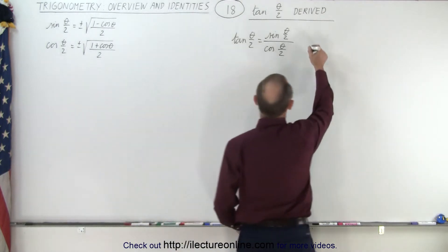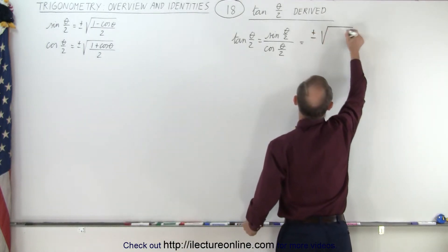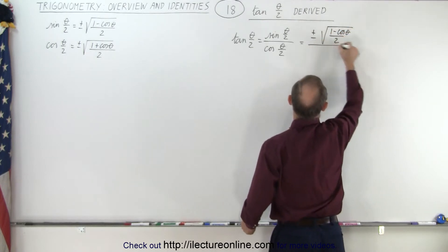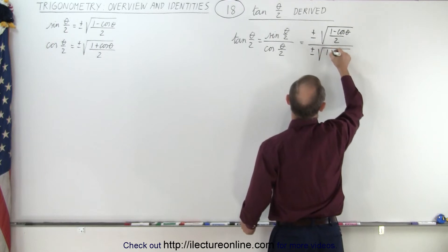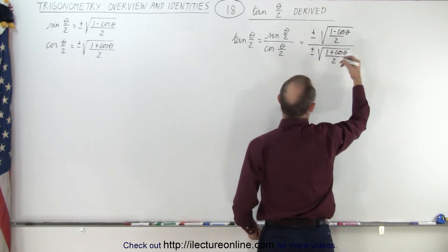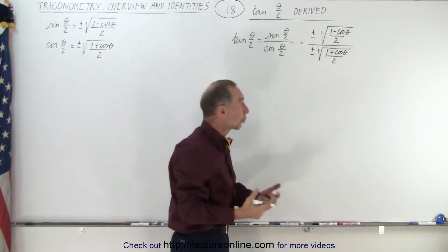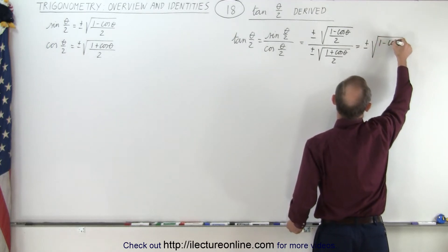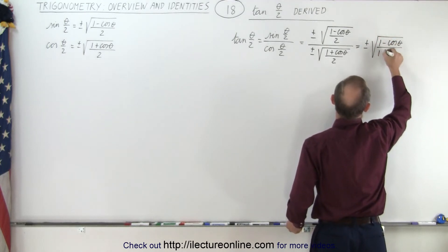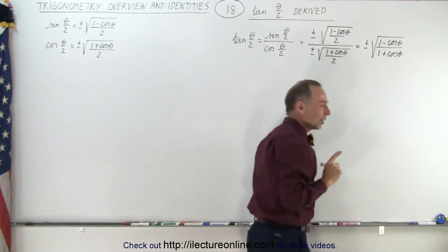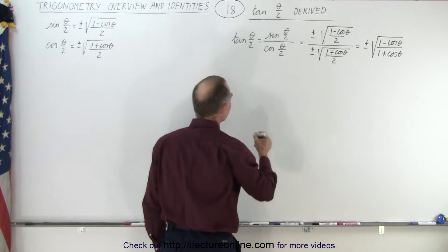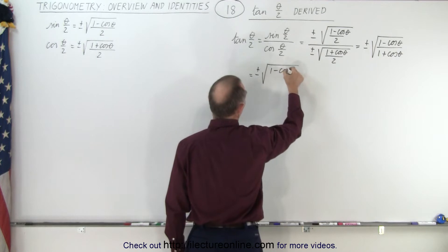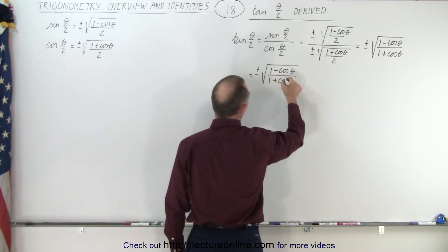So this can be written as plus or minus the square root of (1 minus cosθ)/2 divided by plus or minus the square root of (1 plus cosθ)/2. If we multiply both the numerator and denominator by the square root of 2, we end up with plus or minus the square root of (1 minus cosθ) divided by (1 plus cosθ).